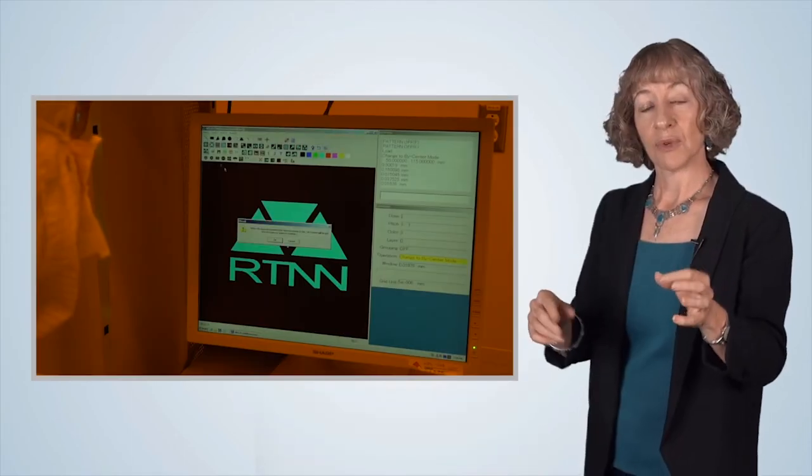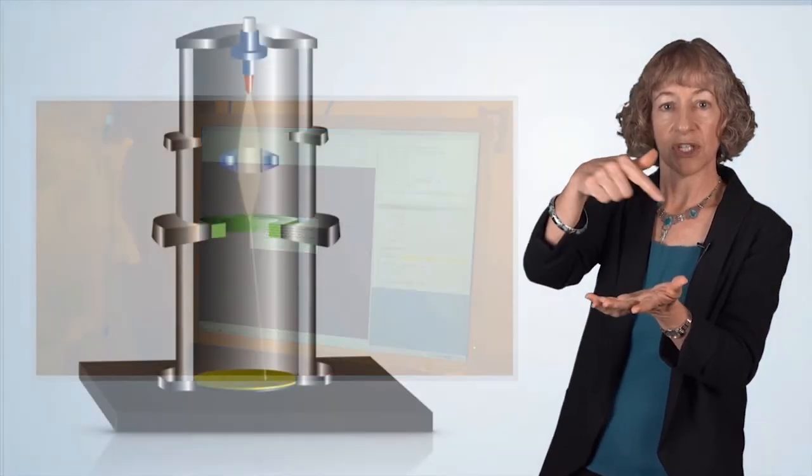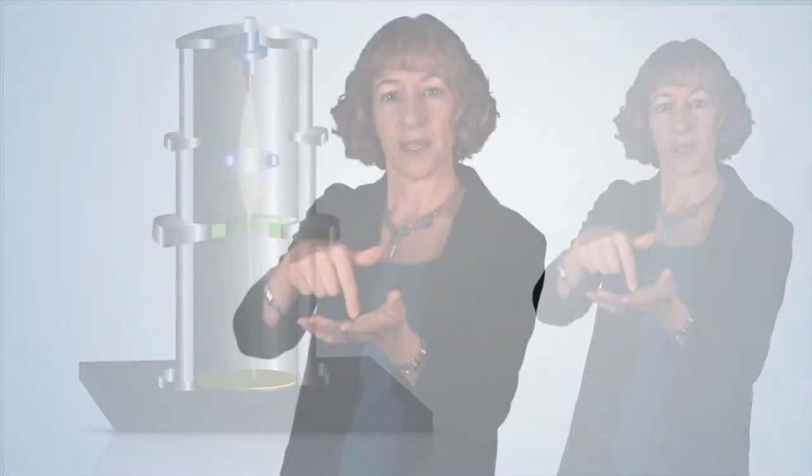The EBL reads the data from your computer file program, and this information is used to steer the electron beam to create your pattern in the resist. When the EBL has completed the patterning,